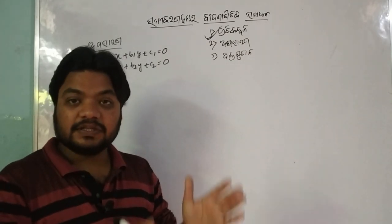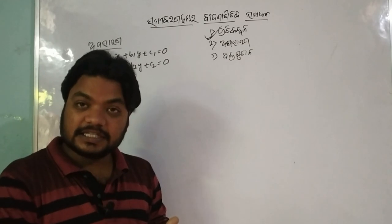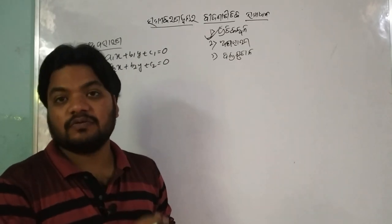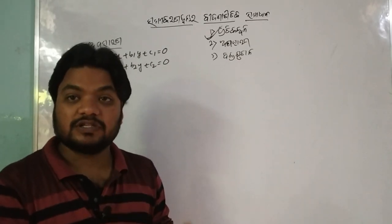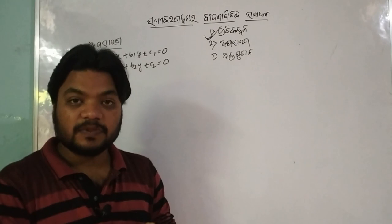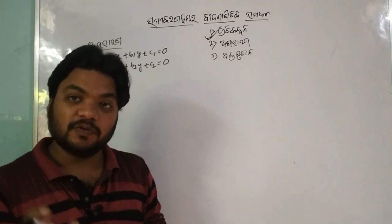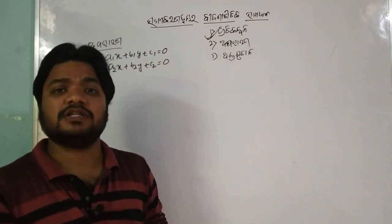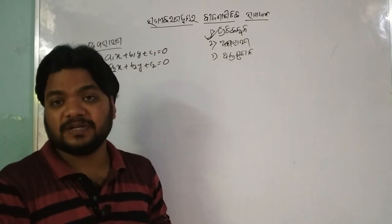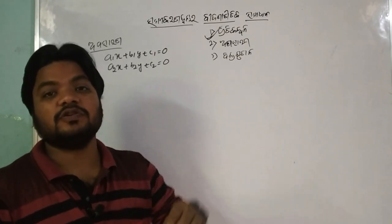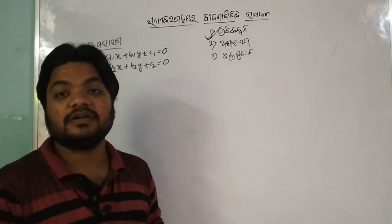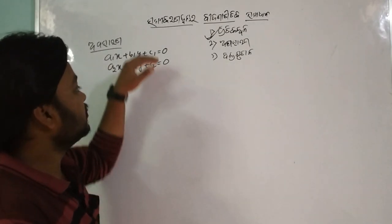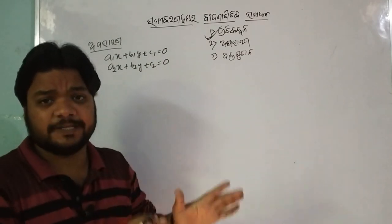Then you use y and x. If I get a simple way, you will get y and x. Now, the x will be one and the y will get 2.